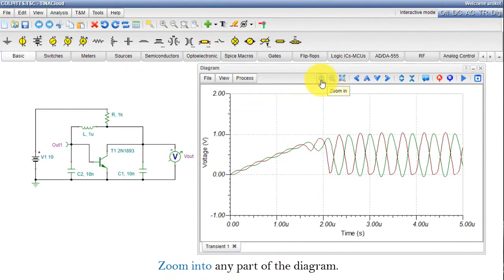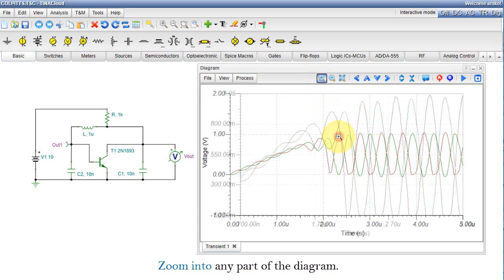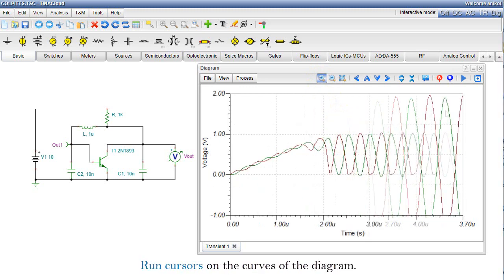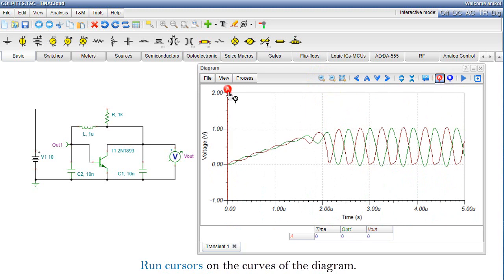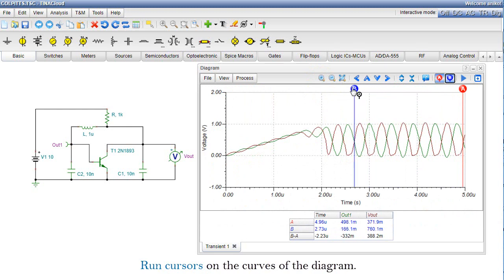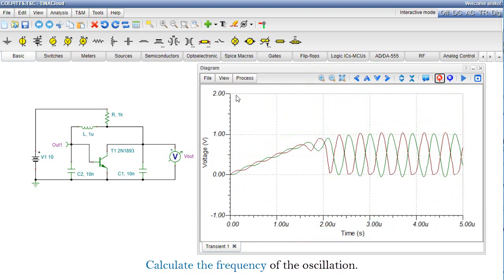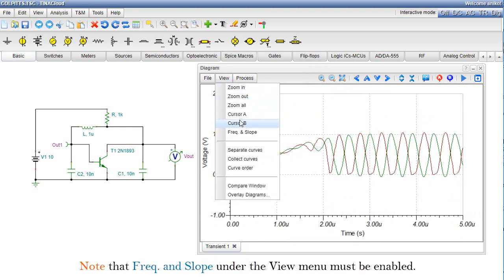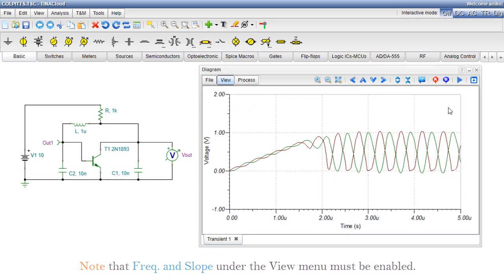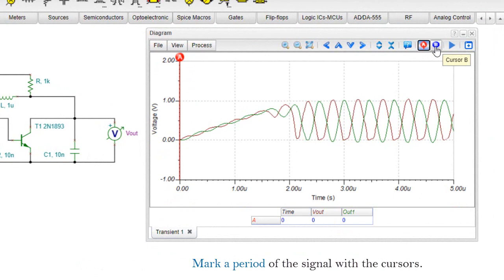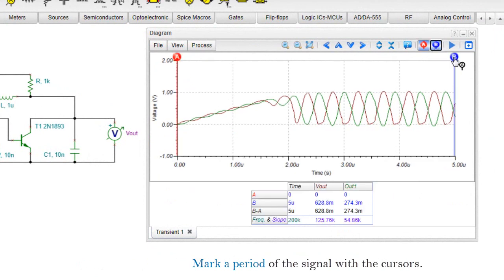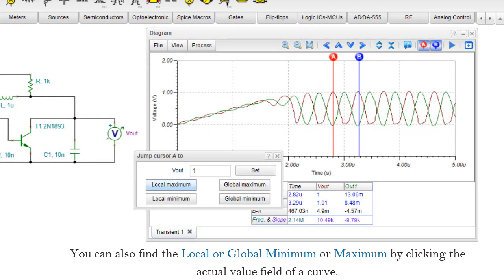Zoom into any part of the diagram. Run cursors on the curves of the diagram. Calculate the frequency of the oscillation. Note that frequency and slope under the View menu must be enabled. Mark a period of the signal with the cursors. You can also find the local or global minimum or maximum by clicking the actual value field of a curve.